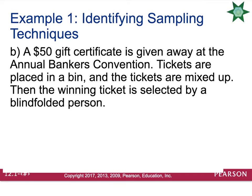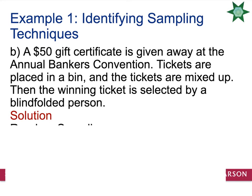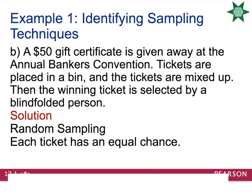A $50 gift certificate is given away at the annual bankers convention. Tickets are placed in a bin and mixed up, then the winning ticket is selected by a blindfolded person. We didn't subdivide anybody or start counting anyone — this is just an example of a random sample. Every ticket has an equal chance to be selected. If they started making certain tickets larger than others, that would no longer be random.